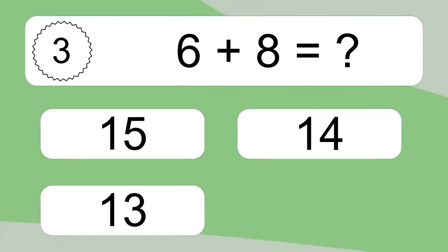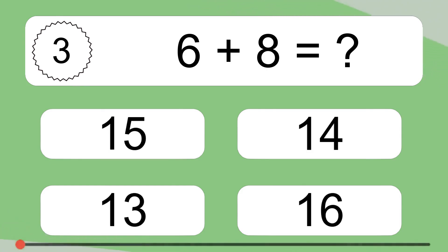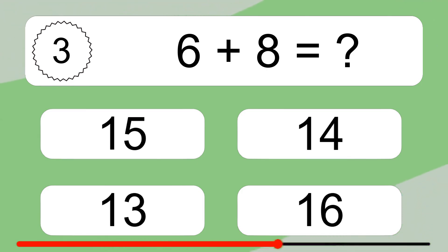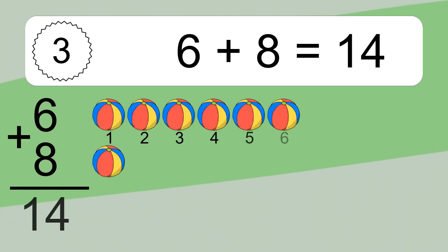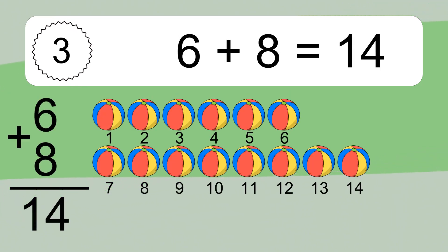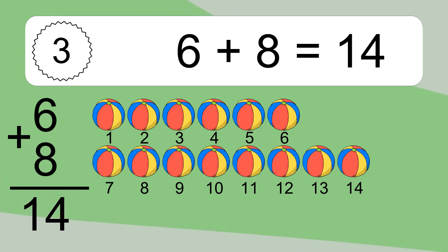6 plus 8 equals what? 6 plus 8 equals 14. Let's count it: 1, 2, 3, 4, 5, 6, 7, 8, 9, 10, 11, 12, 13, 14.